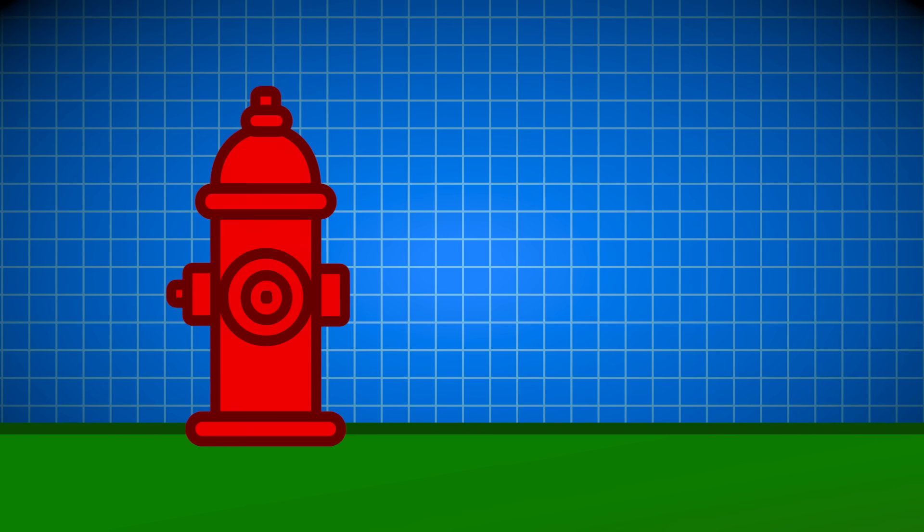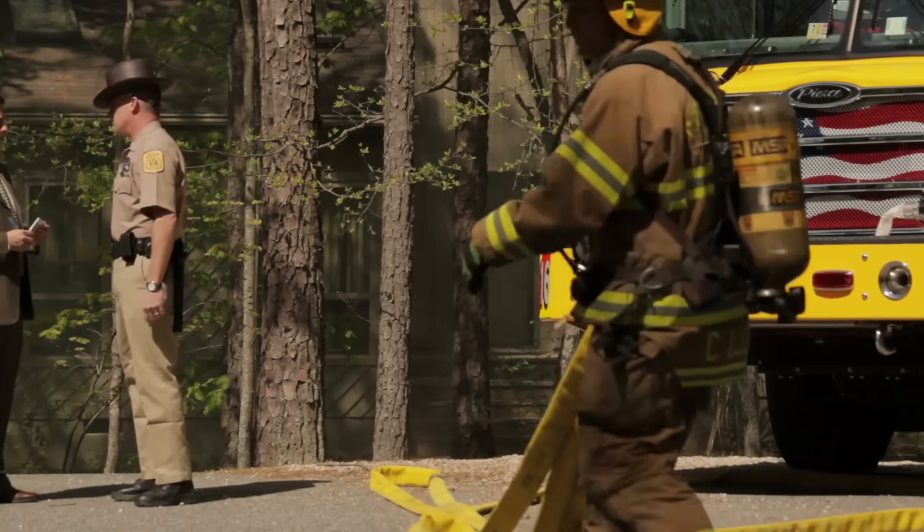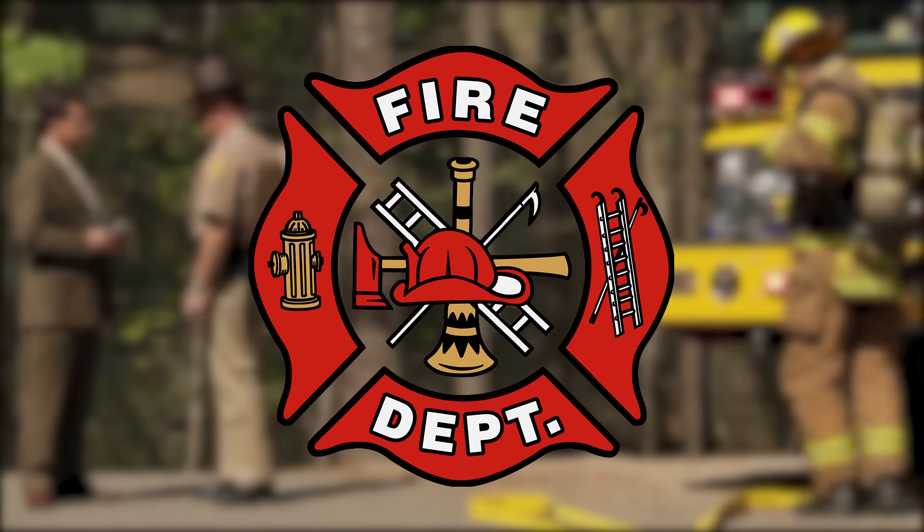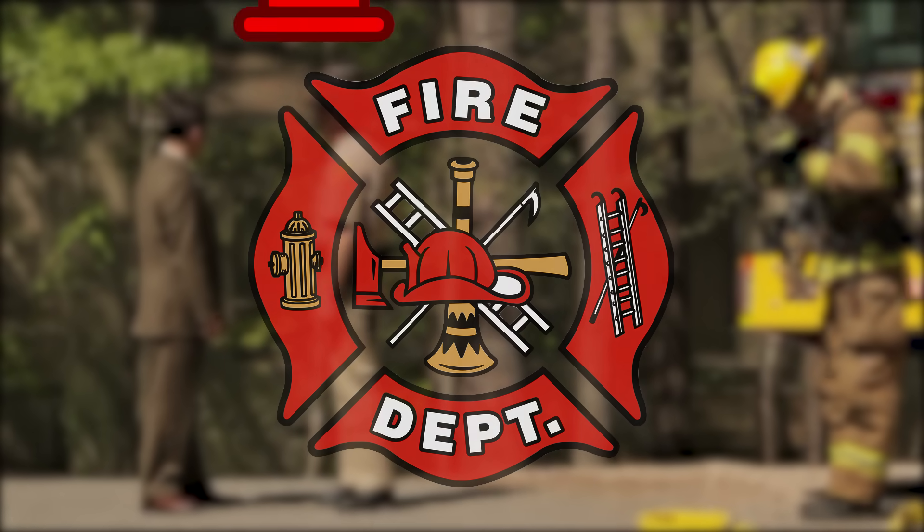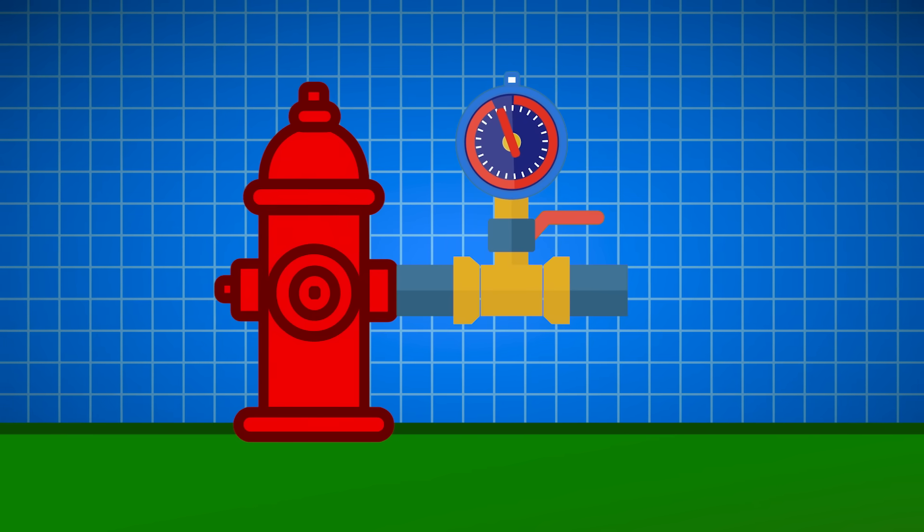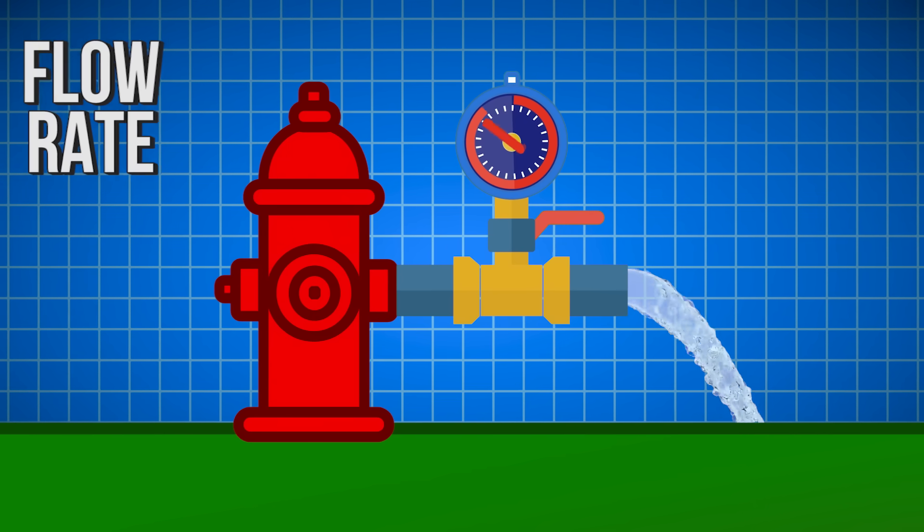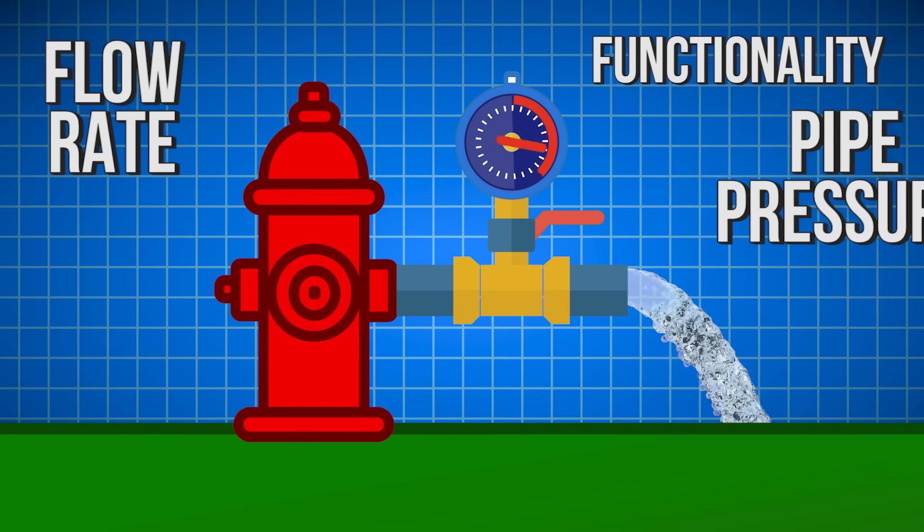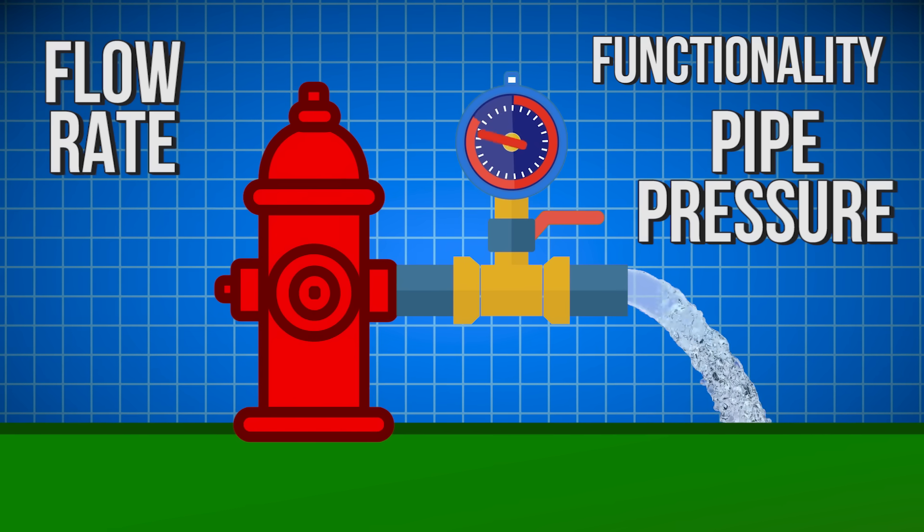Some hydrants are rarely used, which is obviously preferable, but they still have to remain at the ready. This importance means that the fire marshal and other authorities perform regular inspections of hydrants, usually by attaching a pressure gauge and measuring the flow of water. Inspectors will check flow rate, valve functionality, and pressure in the pipe, both before and during the flow.